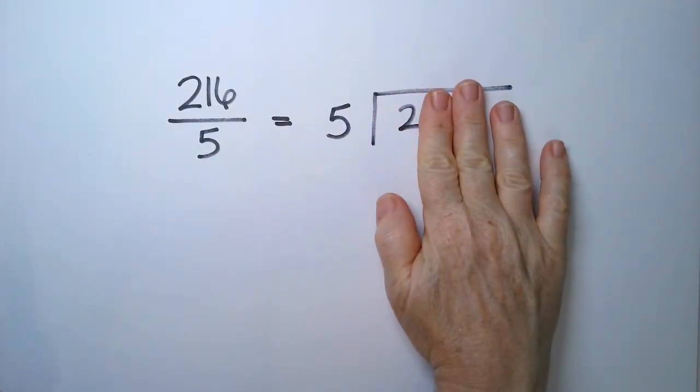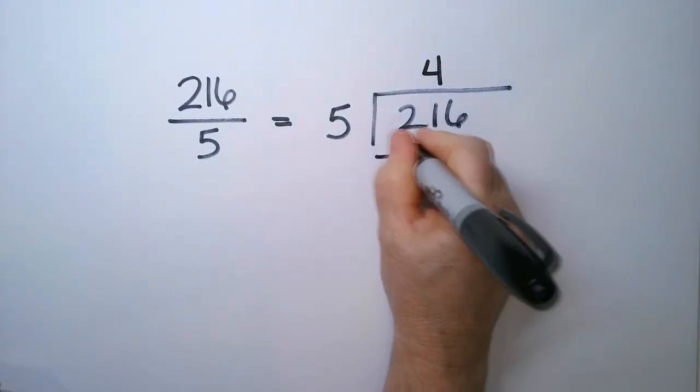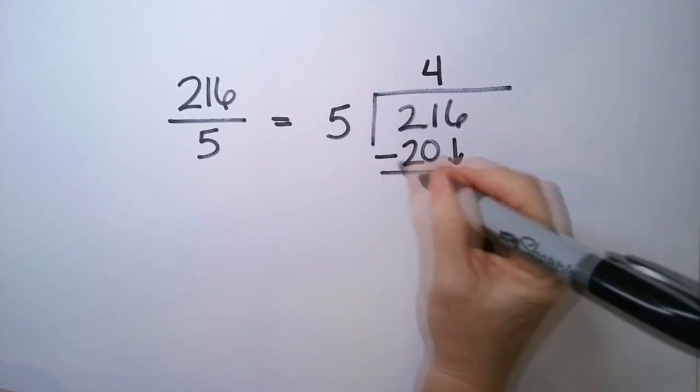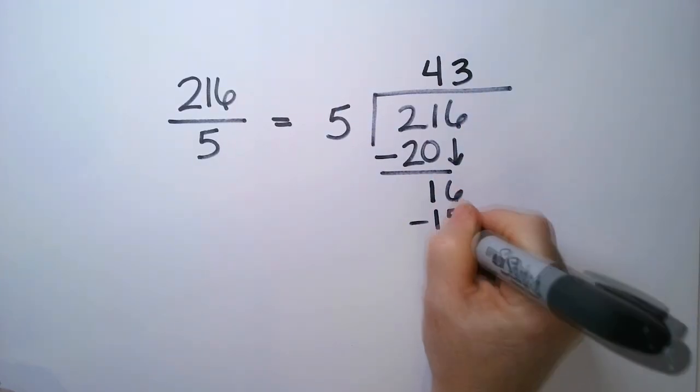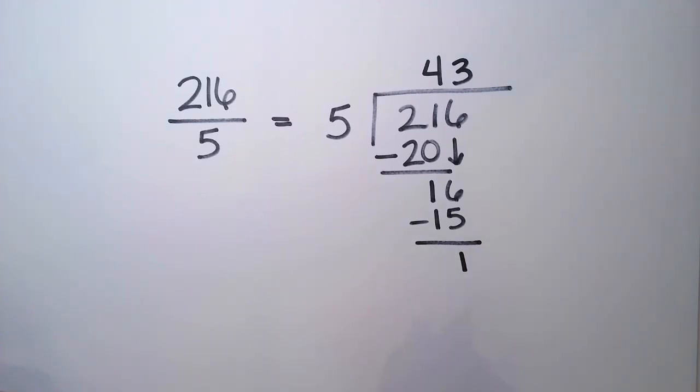5 doesn't go into 2. It goes into 21, though, 4 times. So we put the 20 here. We take the difference. We have a 1. Bring down the 6. 5 goes into 16 three times. So 3 times 5 is 15. Take the difference. And then stop. Stop right there.